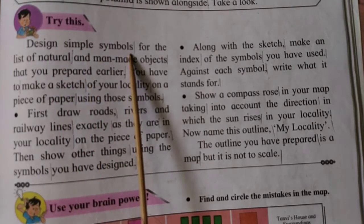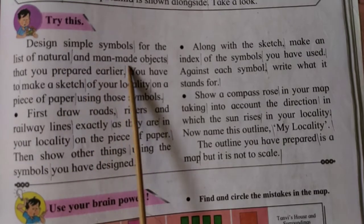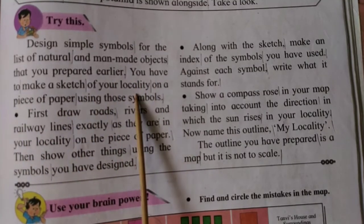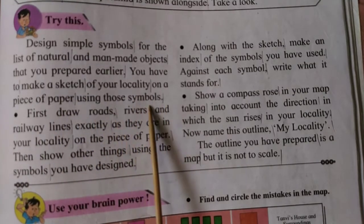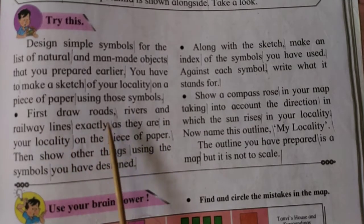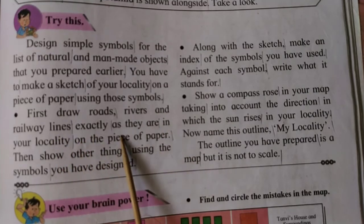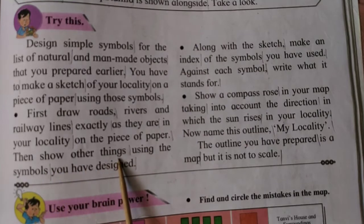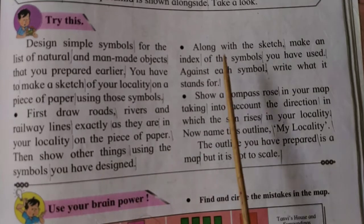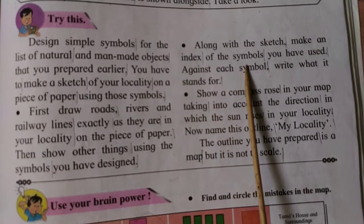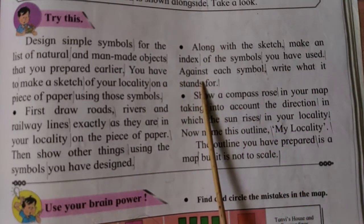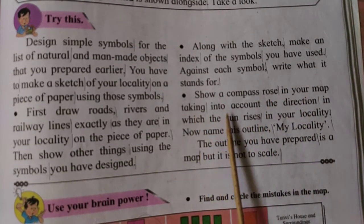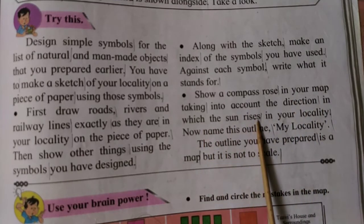Try this. Design simple symbols for the list of natural and man-made objects that you prepared earlier. You have to make a sketch of your locality on a piece of paper using those symbols. First, draw roads, rivers, and railway lines exactly as they are in your locality on the piece of paper. Then show other things using the symbols you have designed. Along with the sketch, make an index of the symbols you have used. Against each symbol, write what it stands for. Show a compass rose in your map, taking into account the direction in which the sun rises in your locality.